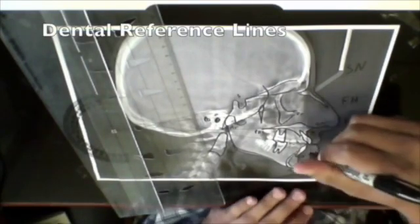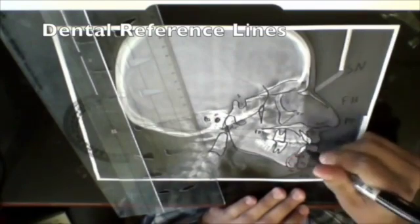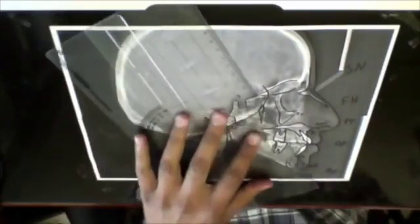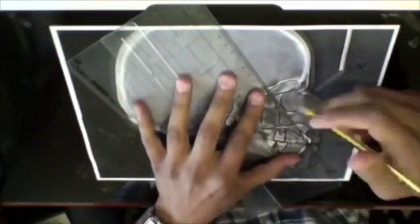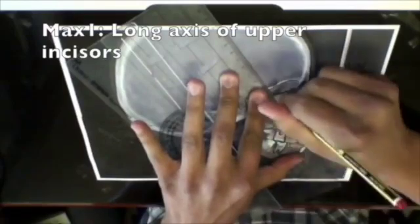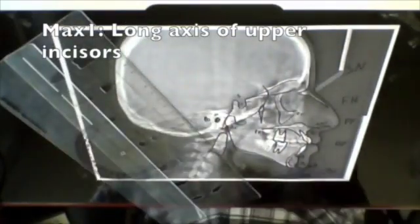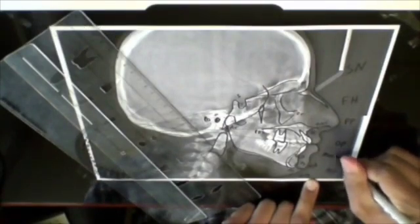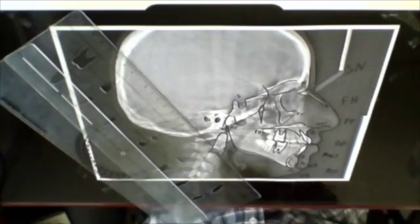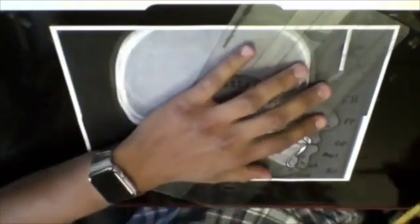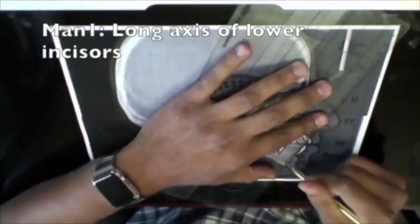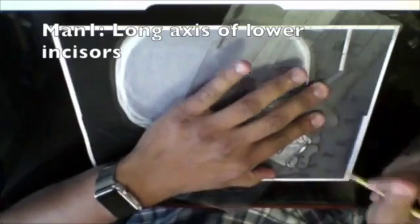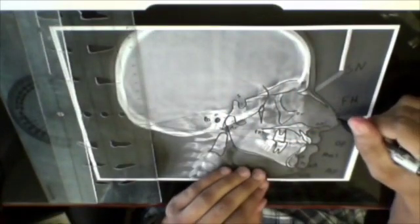Now you can move on to drawing the long axis of your incisors which indicates the inclination of your anterior teeth, namely the central incisors. So you can start with the maxillary incisors. You can call that max one and then move on to your lower central incisor, draw the long axis and call it man one or mandibular one indicating a central incisor in the mandible.